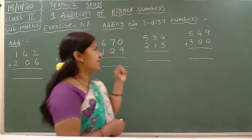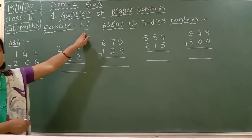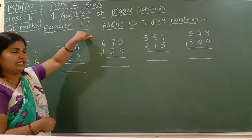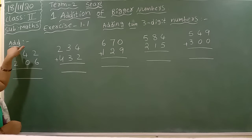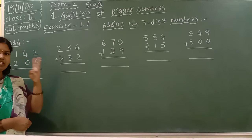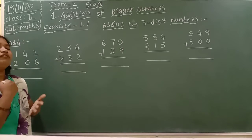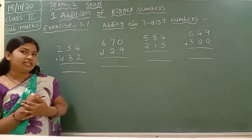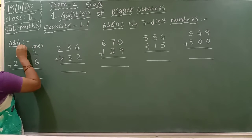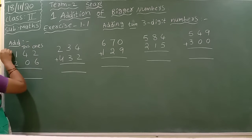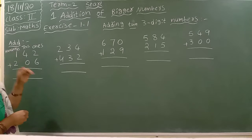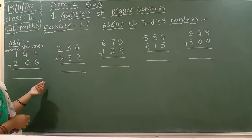That is Exercise 1.1, page number 46 and 47. After the class, open your textbook and check it. Page number 47 — see 1s, 10s, 100s. They have given 3 place values. Out of these 3, which place do we add first? First we add the 1s place. This is 10s place, this is 100s place — H-U-N-D-R-E-D-S — 100s place.